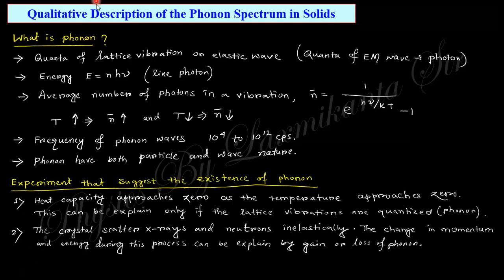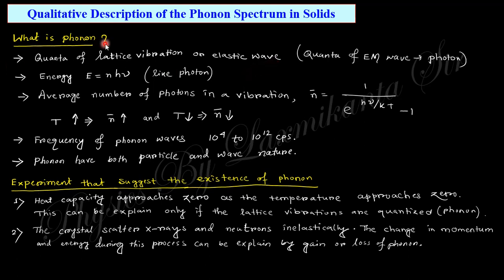What is a phonon? The quanta of the electromagnetic wave is the photon, which carries energy h-nu, and the total energy is equal to n times h-nu. Similarly, the quanta — or the smallest unit — of lattice vibrational energy or elastic wave energy is known as the phonon. So phonon is similar to photon: photon is the quanta of electromagnetic waves, and phonon is the quanta of lattice vibration or elastic waves.